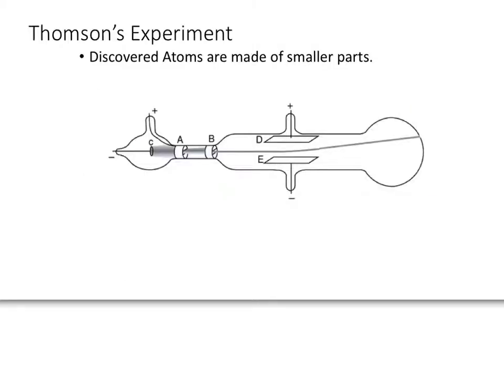Alright, here is what Thompson did. He built a tube, a glass tube, and he ran an electrical current through it. So here he ran an electrical current. Now you've got to remember the smallest known thing before Thompson, which was Dalton, was the atom.